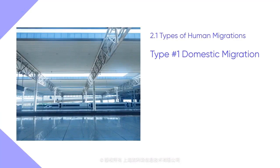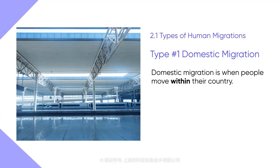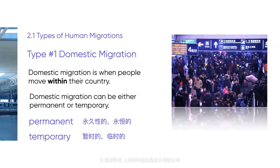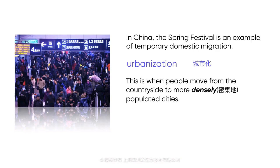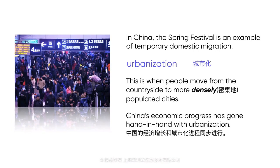Domestic migration is when people move within their country. They may move towns, or move from a rural area to an urban area. Domestic migration can be either permanent or temporary. In China, the Spring Festival is an example of temporary domestic migration. During Chinese New Year, hundreds of millions of Chinese from around the country travel back to their hometowns — it has been called the largest migration in the world. Another example is urbanization, when people move from the countryside to more densely populated cities. In 1950, only 13% of Chinese lived in cities; by 2010, it was 45%.